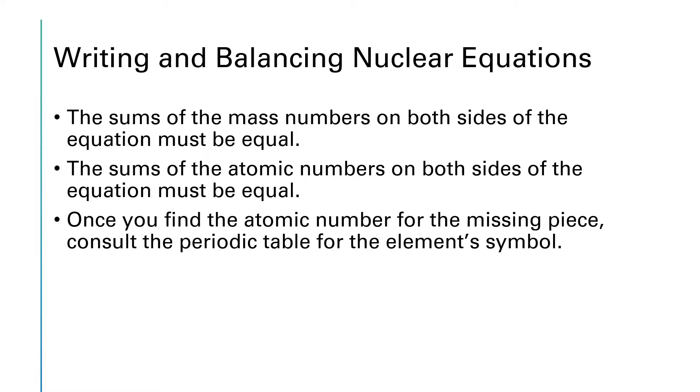Typically in these problems you'll be given all of the species that are present except for one. You'll use the sums of the mass numbers and the atomic numbers to figure out the mass number and atomic number for the missing piece. Once you know the atomic number for the missing piece, you can go to the periodic table and see what the identity of that element is and look up its symbol.